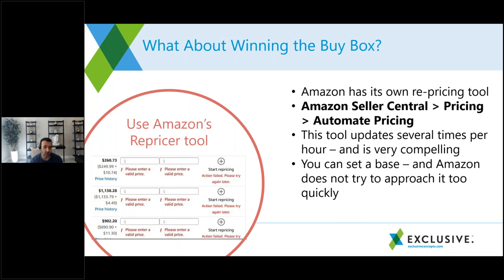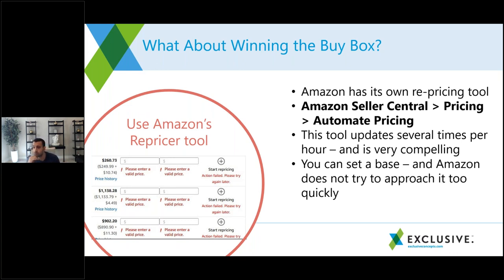For winning the buy box, no technology is better than what Amazon has built itself — their repricer updates constantly. Even if you set a low price floor, say two dollars, Amazon won't drop to that floor; it will try to stay at whatever makes them the most money while still making you win the buy box. We also built a pricing intelligence tool for tracking changes, understanding competitor movements, and accounting for margin — but for actually firing off reprices, use Amazon's own tool.